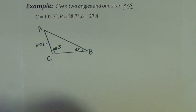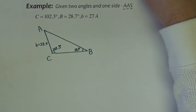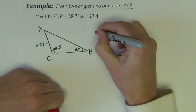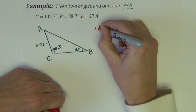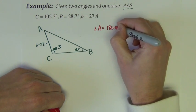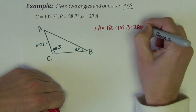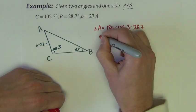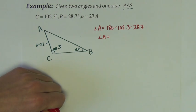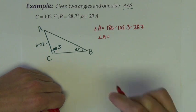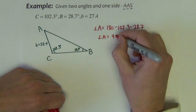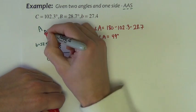Well, the third angle is easiest to find, so let's start right there. Angle A would be equal to 180 minus 102.3 minus 28.7. So angle A, and I'm doing this on my calculator on the side. Angle A is equal to 49 degrees.